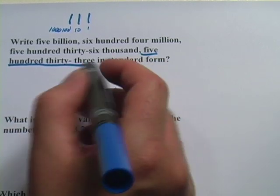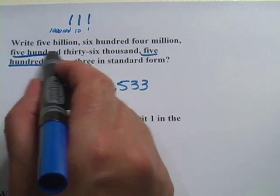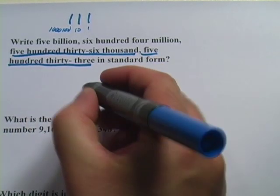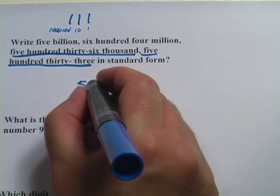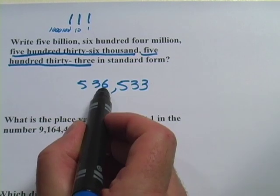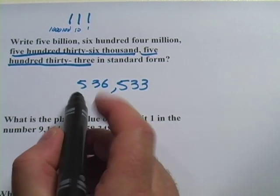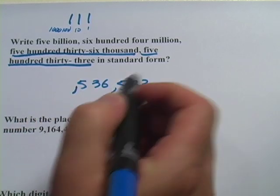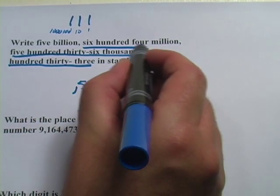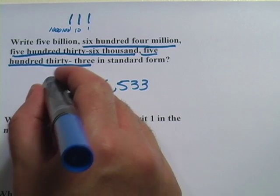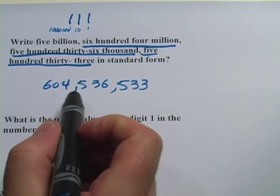So let's look at the next one. We have 536,000. So in the thousands we put 536, we have 6 in the thousands, 3 in the 10,000's, and 5 in the 100,000's. Now let's go up to the millions, 604 million, so that's 604 million.